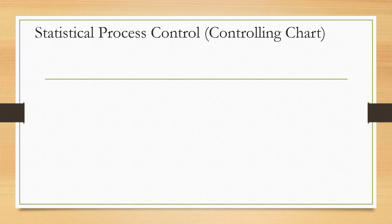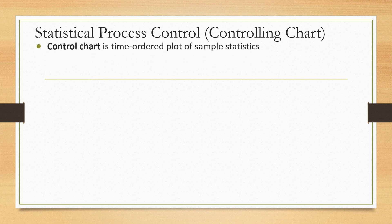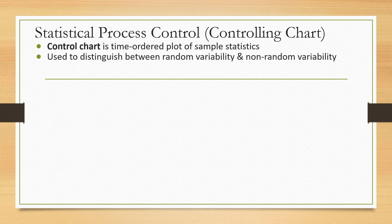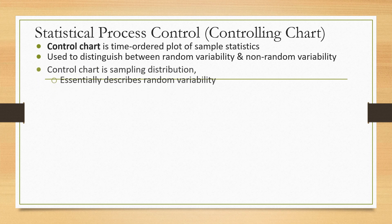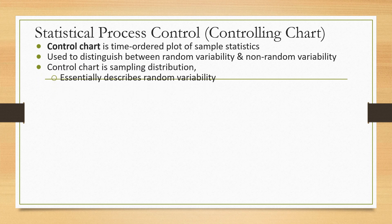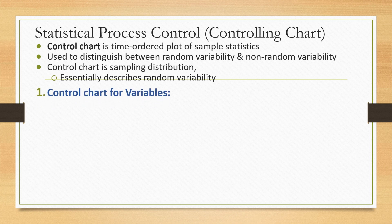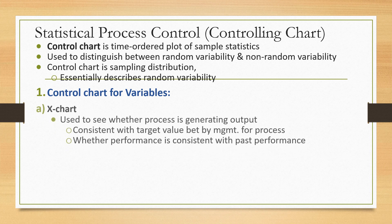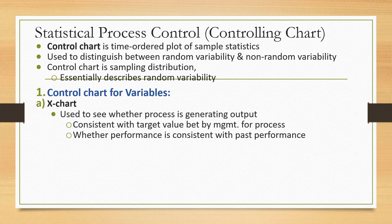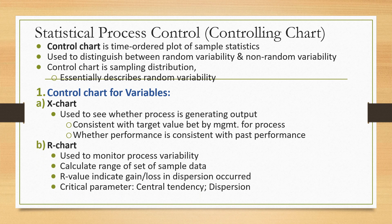Statistical Process Control uses a control chart, which is a time-ordered plot of sample statistics used to distinguish between random variability and non-random variability. The control chart essentially describes a sampling distribution of random variability. For control charts for variables, the X-bar chart is used to see whether the process is gathering output consistent with the target value set by management, or whether performance is consistent with past performance.